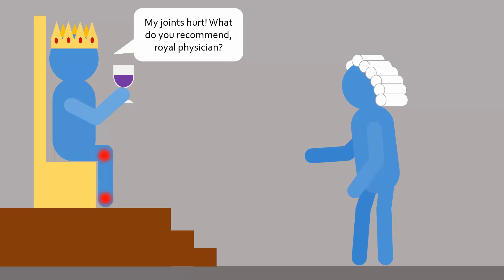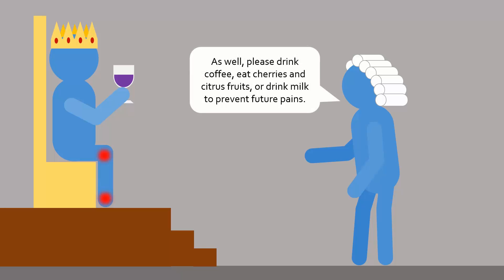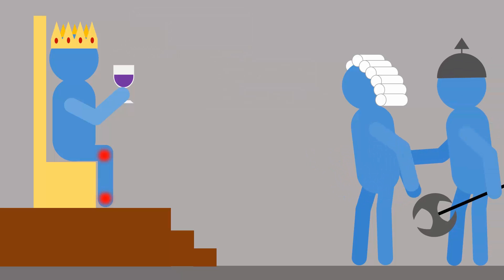By eating less of these food groups, uric acid levels in blood can decrease, preventing further crystallization. Other foods such as caffeine, cherries, vitamin C, and milk seem to prevent future gout attacks, though their mechanism on how they lower uric acid levels is still unclear.